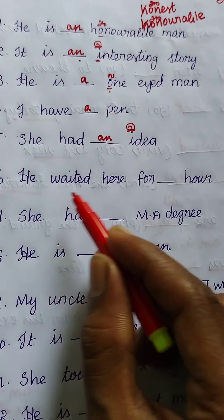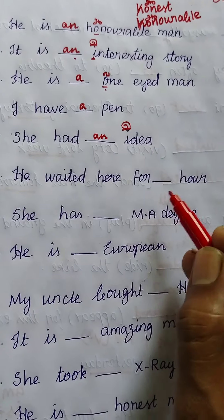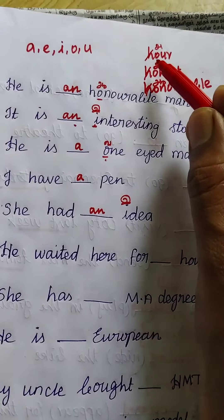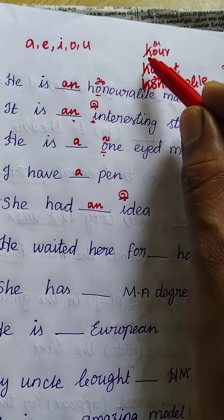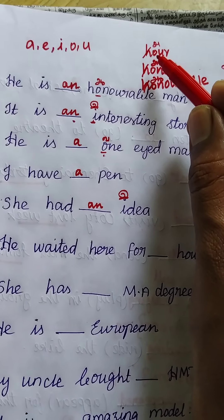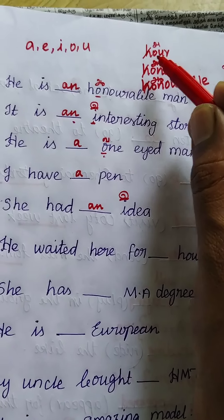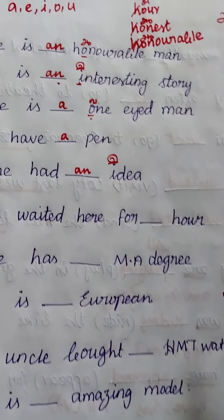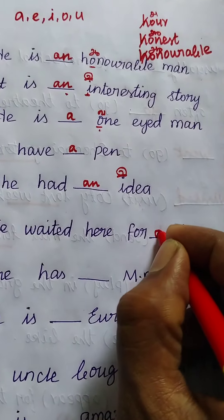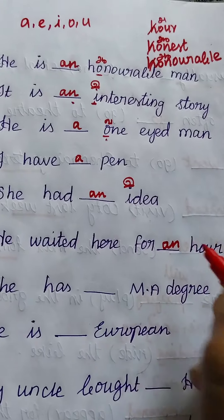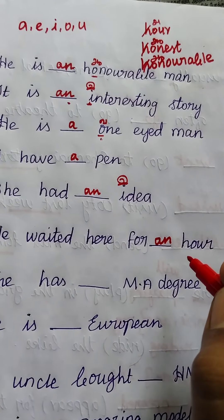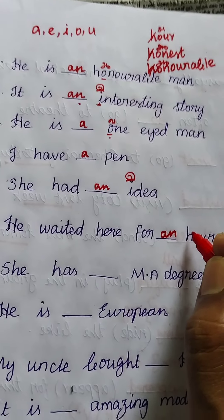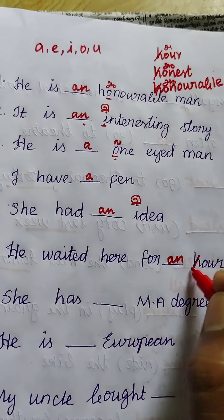Sixth example: 'He waited here for ___ hour.' We have already seen that the H is silent in 'hour', so the pronunciation starts with a vowel sound. Hence the answer is 'an'. Vowel letter with vowel sound — the H is silent there.